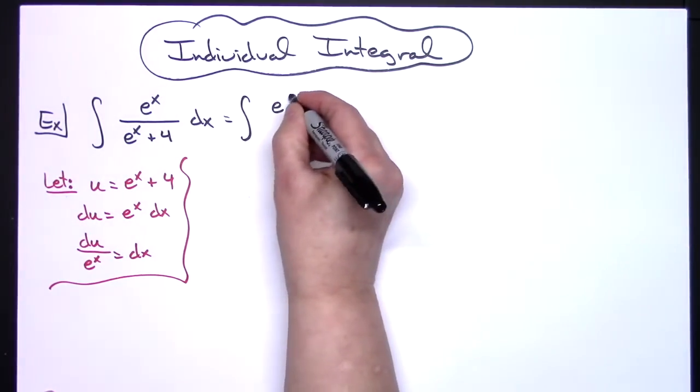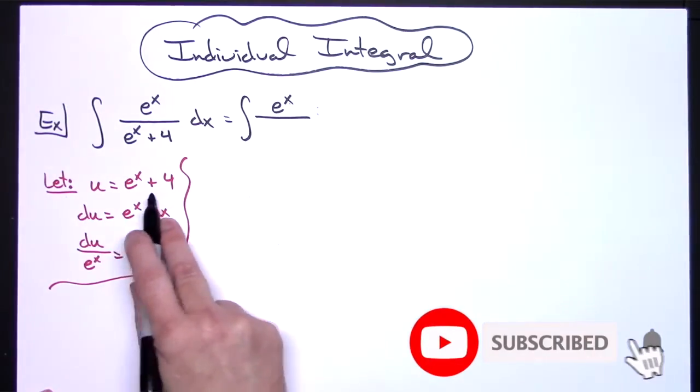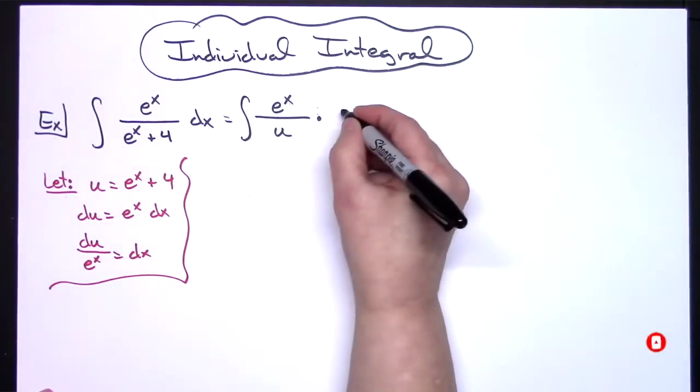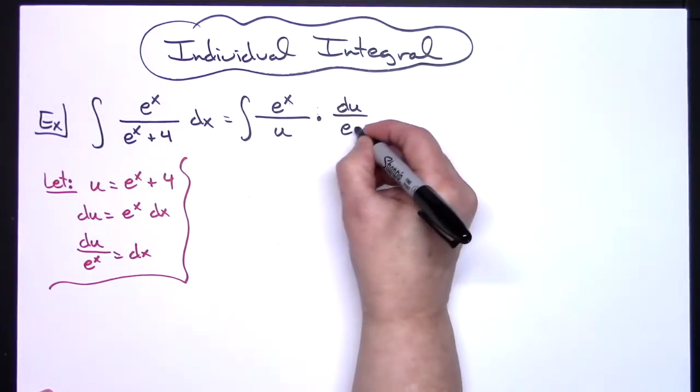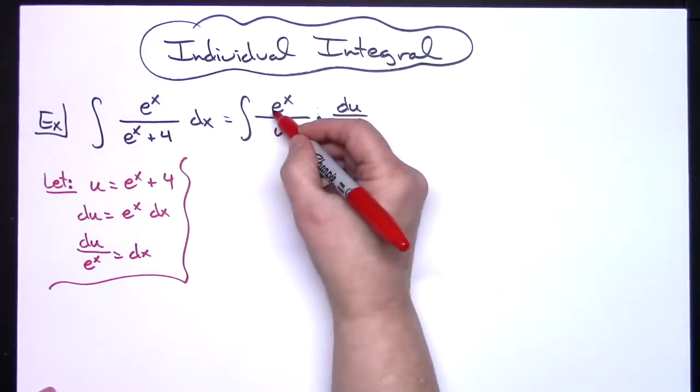I'll go ahead and leave that e to the x in the numerator. I'll replace the denominator with a u, and then I will replace dx with what it equals, which is that du over the e to the x. That's going to allow me then to cross out those e to the x's.